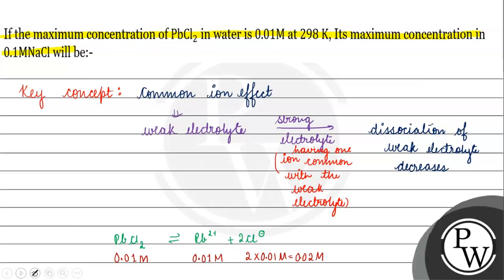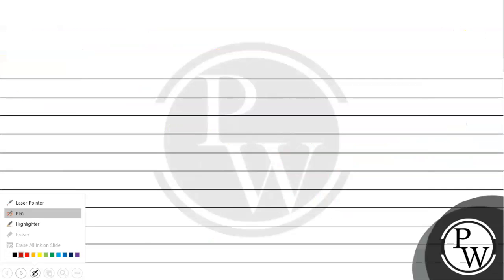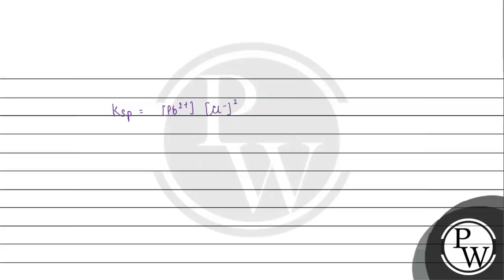The concentration of Pb2+ is 0.01 molar and Cl- is 0.02 molar, so Ksp equals 4×10^-6.